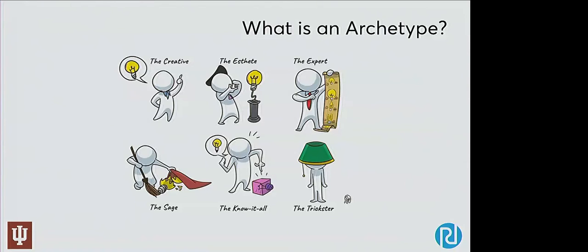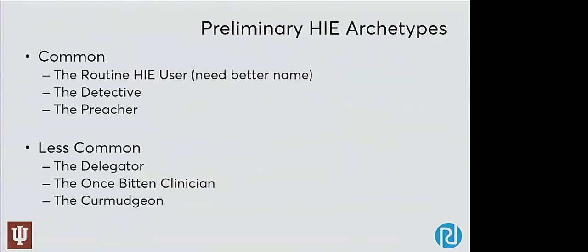As I read through the transcripts, I've come up with a preliminary list. These are six archetypes that I see emerging from some of the reviews I've been doing of the data. The first one — in Jungian terms there's the common man — I want to call it the routine HIE user, but I'm looking for something jazzier. Some of the less common ones include the delegator — sometimes when we ask a physician or nurse practitioner how they find outside information, they say they delegate that to a nurse, RN, or MA. Then of course there's the curmudgeon — I'm not going to use that HIE thing and I've never attempted to use it.